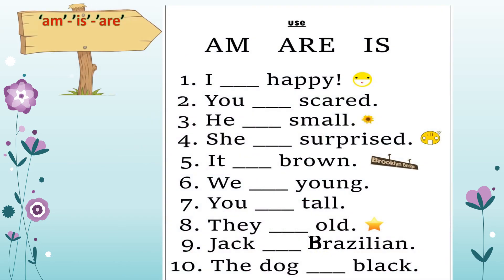Now that you all know what to use when, can you try and tell me what I should use where? Let's see — am, is, are — use them. Read the first line: I dash happy. We have already learned that am goes only with I, so: I am happy. Next: You dash scared. We have learned that you, be it single or plural, are should be used. You are scared.